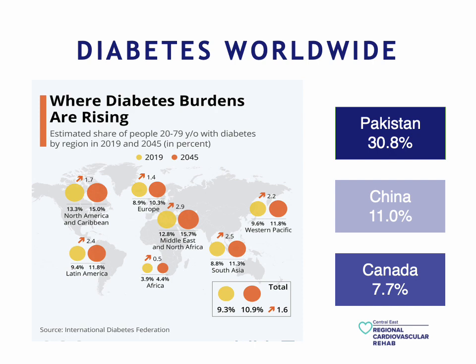Diabetes seems to be growing every single year worldwide, with the worldwide rate being approximately 10%, here in Canada about 8%, with about 22% for those who have prediabetes here in Canada. Pakistan has one of the highest rates in the world at 30%. This trend seems to be growing every year, and take into account that this only shows those who have been diagnosed. How many of those out there are undiagnosed?